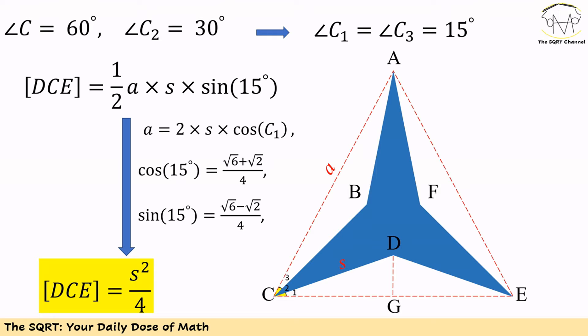We know a is equal to 2 times s times cosine of C1. Cosine of C1 is equal to (√6 + √2)/4, and sine of C1 is equal to (√6 - √2)/4. If we replace all the values, then the area of DCE is equal to s²/4.